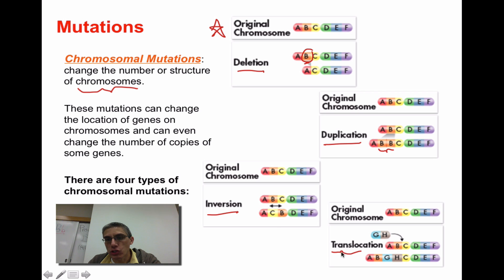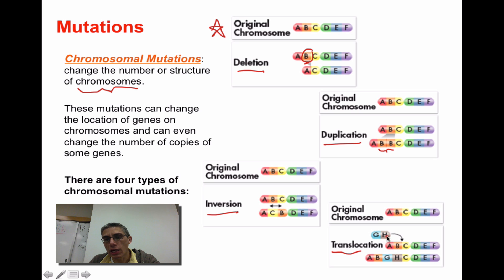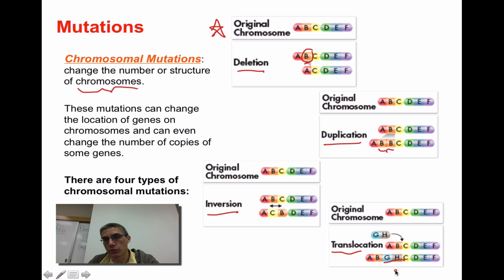Translocation is where you take a larger chunk of material and simply move it. The original chromosome was A, B, C, D, E, F, but in this case we're actually adding a chunk of chromosome from another chromosome in that nucleus. The G and H weren't even there originally, and now we take G and H — which came from someplace else — and insert them between B and C. That gives us a lot more chromosomal material that isn't even supposed to be there, which can definitely cause us problems.